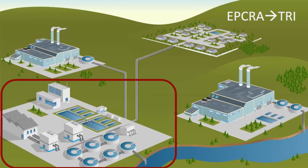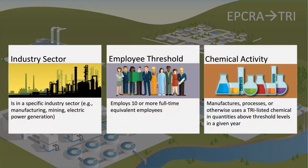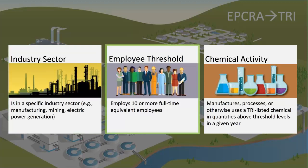Municipal wastewater treatment plants, or POTWs, are not required to report to TRI. In addition, facilities that meet the following three criteria must report to TRI: the facility must be in a TRI-covered industrial sector, as identified by NAICS codes; employ 10 or more full-time employees; and must manufacture, process, or otherwise use a TRI-listed chemical in quantities above the applicable threshold level for the given chemical in a given year.